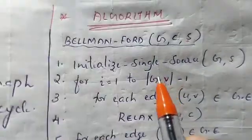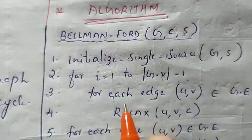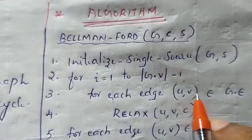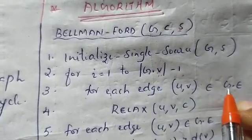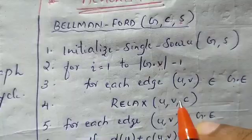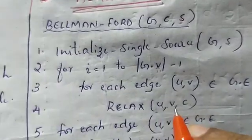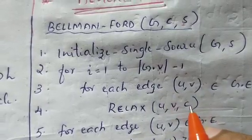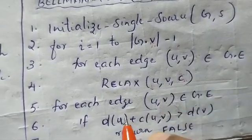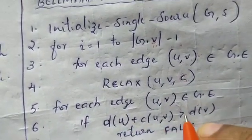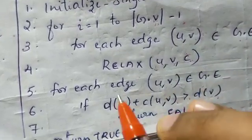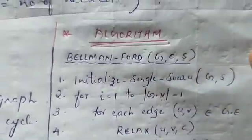In the algorithm, we iterate over each edge in graph G. For each edge, U is the starting vertex, V is the ending vertex, and C is the weight or cost between U and V. If D of U plus C of U, V is less than D of V, we update D of V. Otherwise we return false, and return G — this is the Bellman-Ford algorithm.